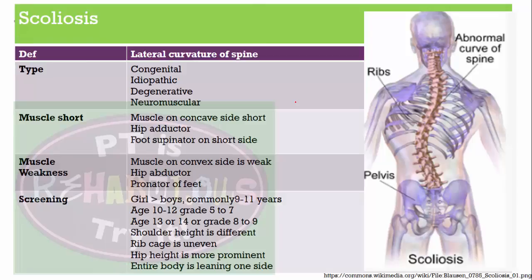Scoliosis means lateral curvature of the spine. It may be congenital, idiopathic, degenerative, or neuromuscular. Some muscles get shortened and some get weak. Muscles on the concave side get shortened — hip abductors are shortened and foot goes into supination on the short side. Muscles on the convex side are weak — hip abductors are weak and pronation of the feet is noted. Scoliosis is more common in girls, with common screening age of 9 to 11 years.